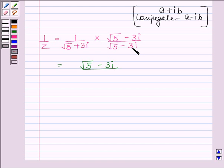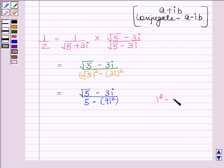This is of the form a plus b into a minus b. So we can use the identity of a square minus b square. This expression is equal to square of root 5 minus square of 3 iota. This is equal to root 5 minus 3 iota upon 5 minus 9 iota square. We know that iota square is equal to minus 1.